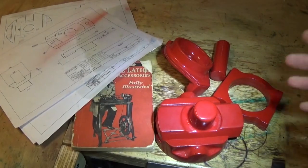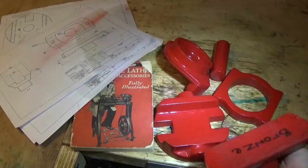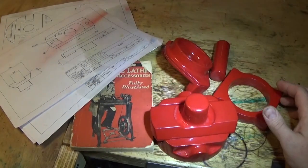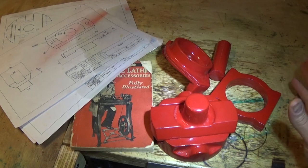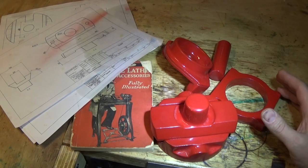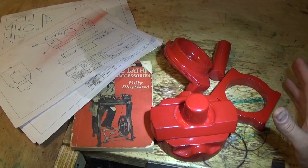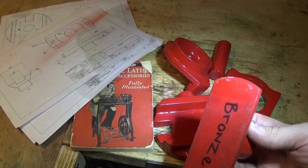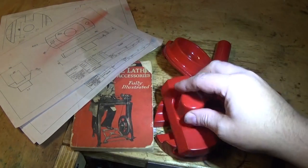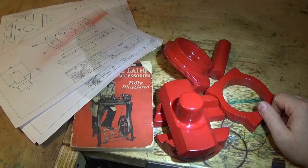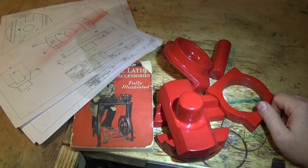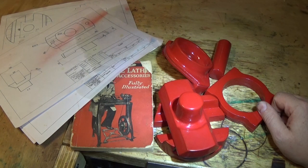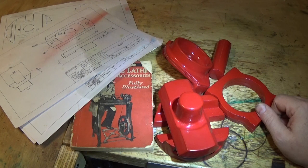I just thought it'd be an interesting thing to make. Most people are asking the question: why do you need an ellipse turning attachment? The reason is that nobody needs an ellipse turning attachment, because if it was something that was useful and something that everyone used, you'd be able to buy one off the shelf, and I don't think that's possible.